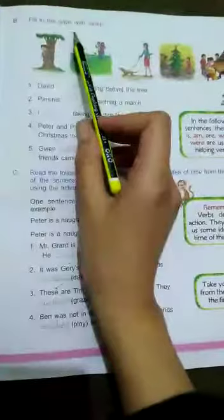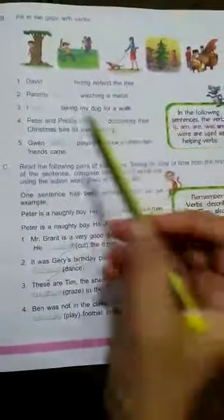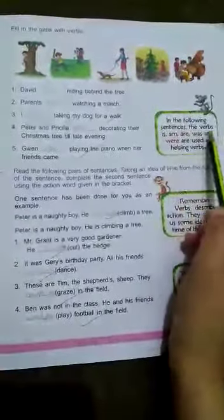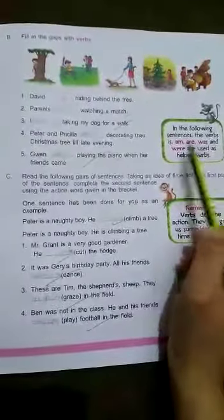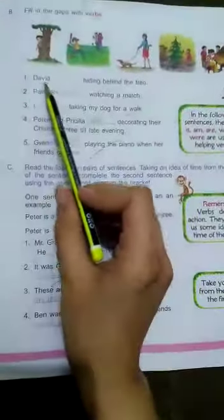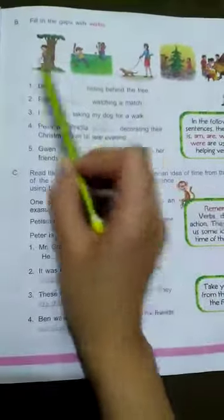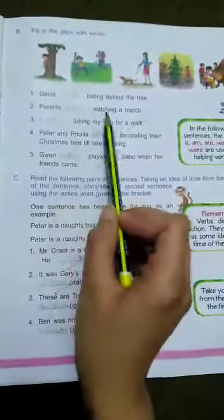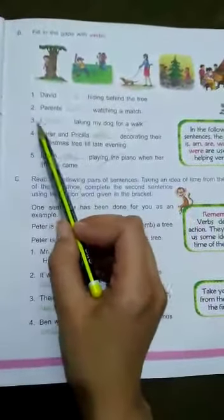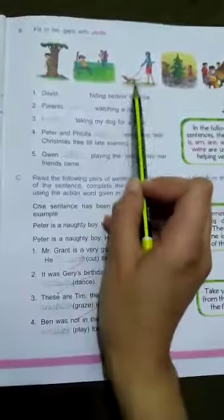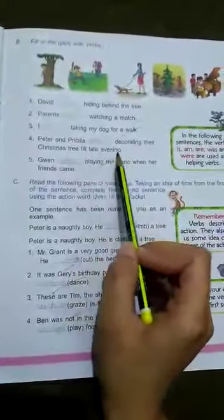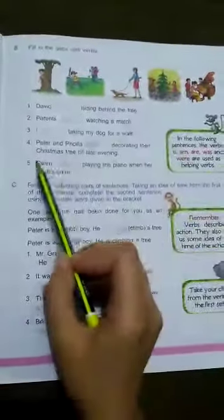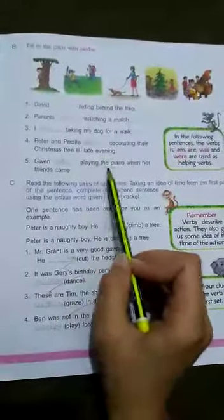Now, come to page number 41. Fill the gaps with verbs. In the following sentences, the verbs is, am, are, was and were are also used as helping verbs. Number one, David is hiding behind the tree. Number two, parents are watching a match. Number three, I am taking my dog for a walk. Number four, Peter and Priscilla were decorating their Christmas tree till late evening. Number five, Govan was playing the piano when her friends came.